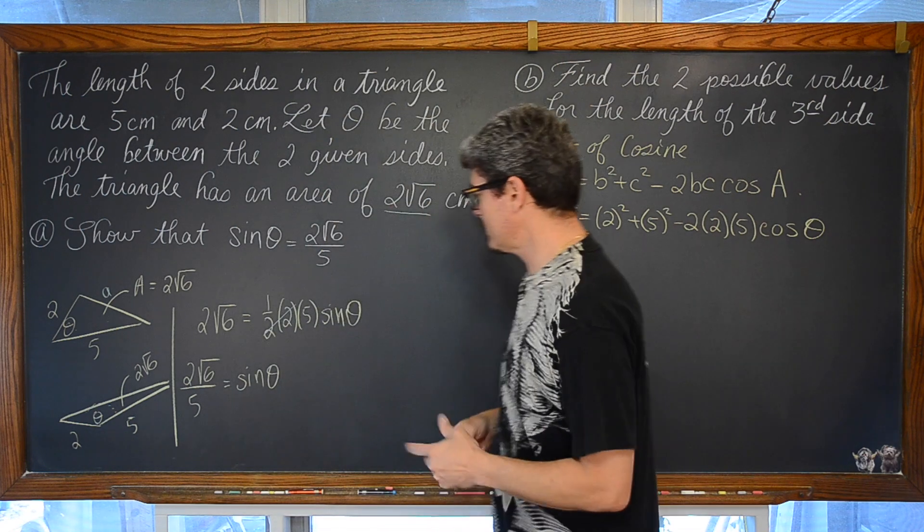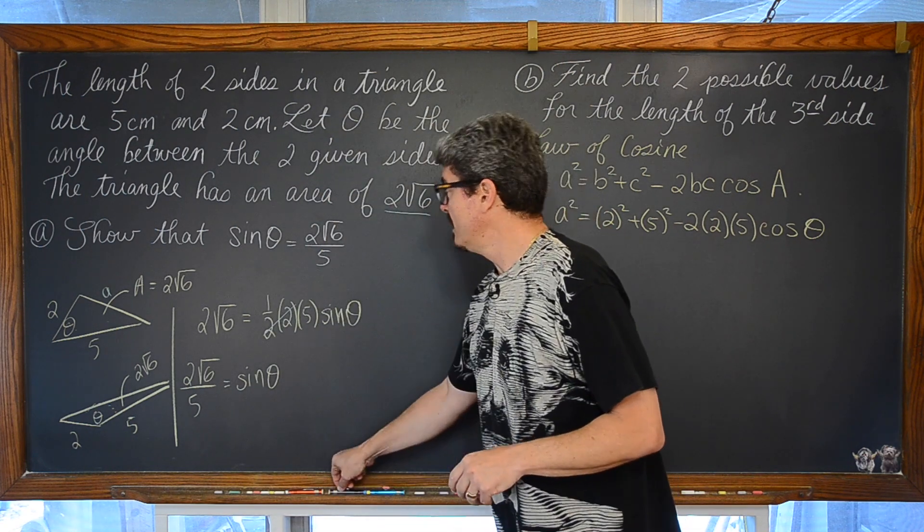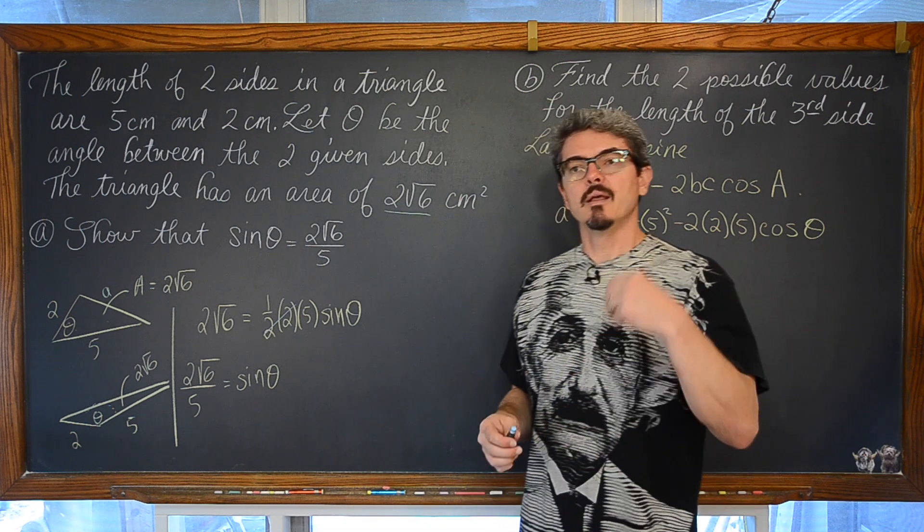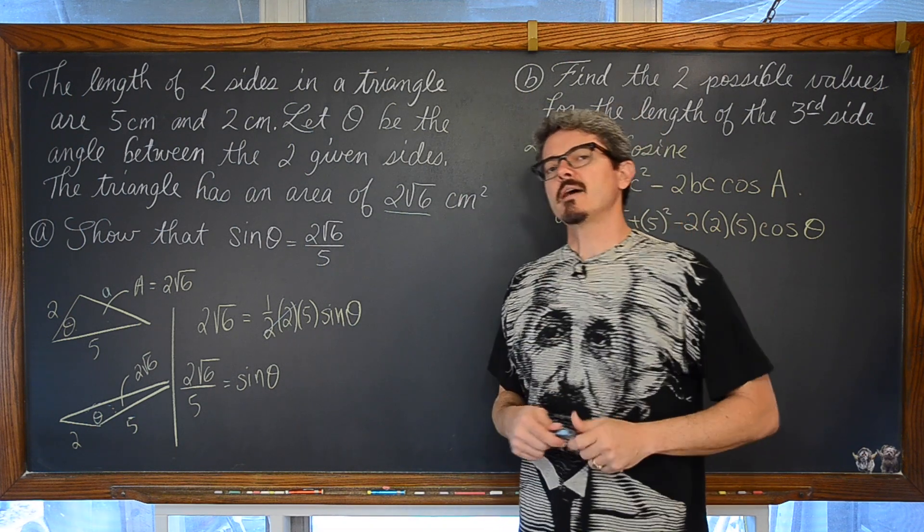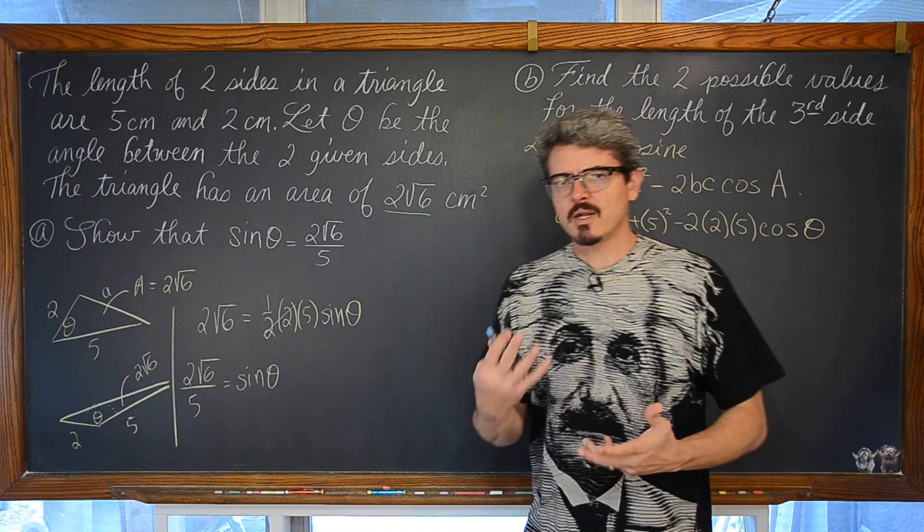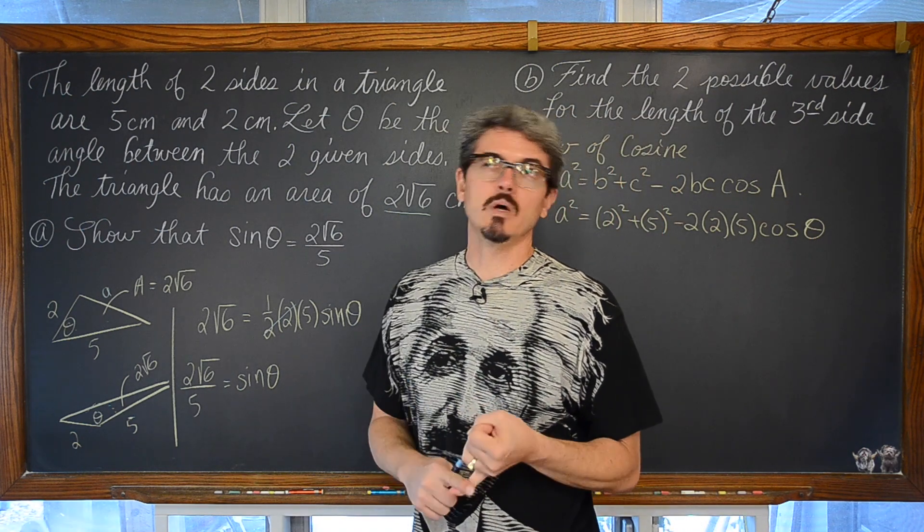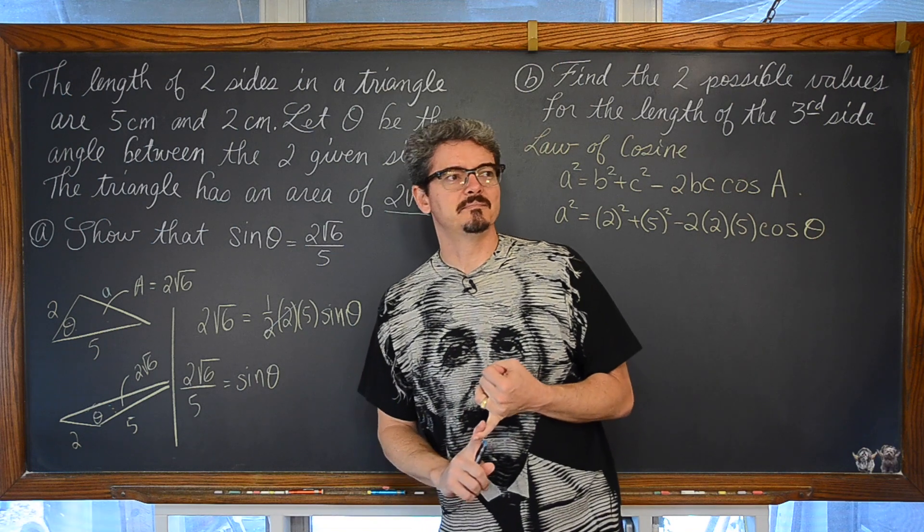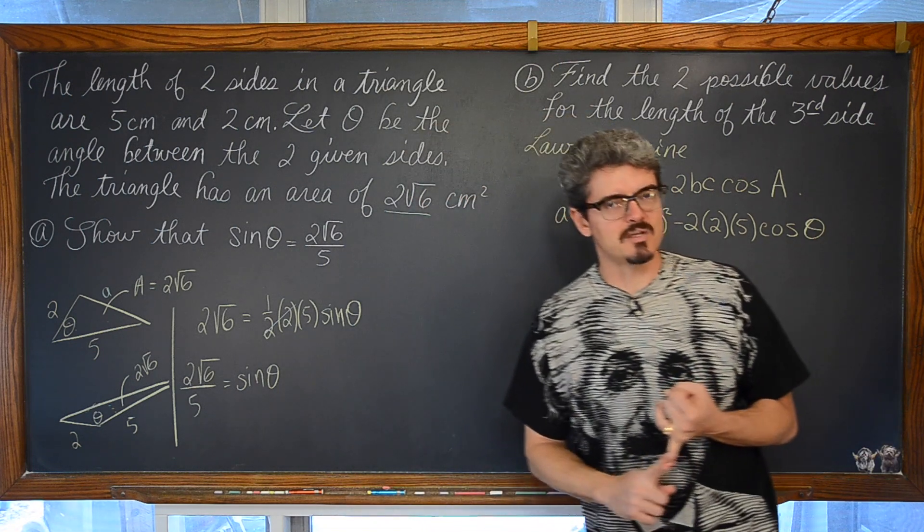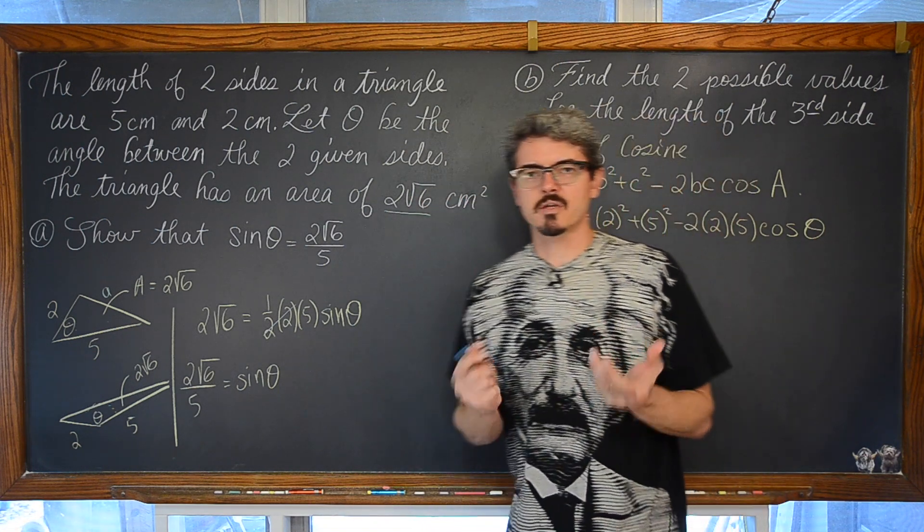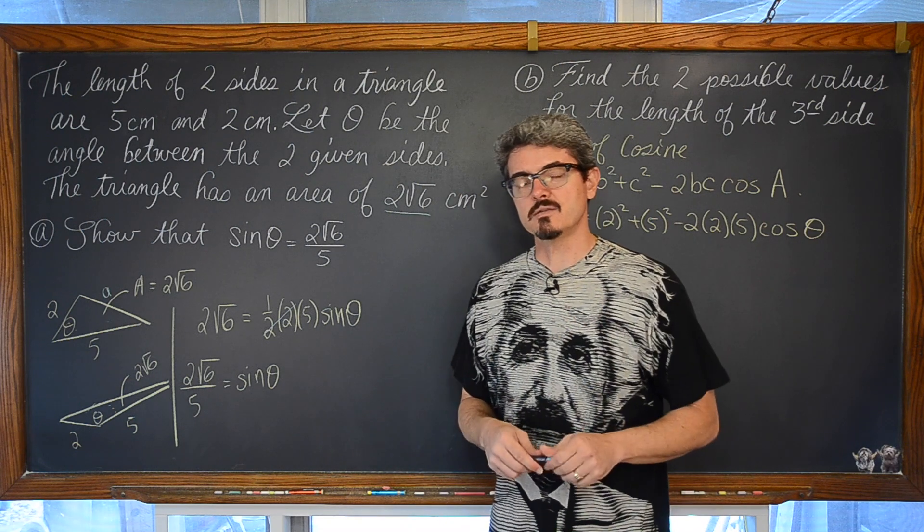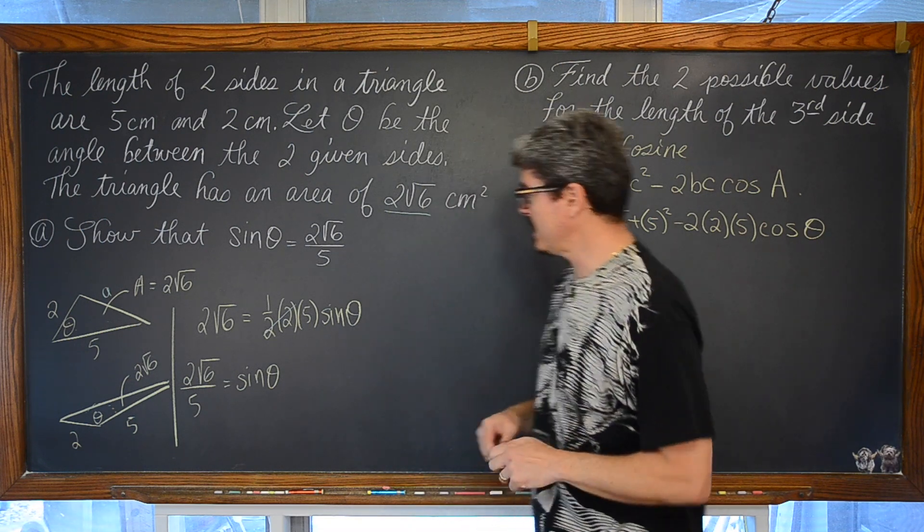You can draw a diagram, which actually I prefer to do for many, many, many of my questions in trigonometry, but you also have those Pythagorean identities. Sine squared theta plus cosine squared theta equals 1. 1 plus tangent squared theta plus tangent squared theta is equal to secant of theta.